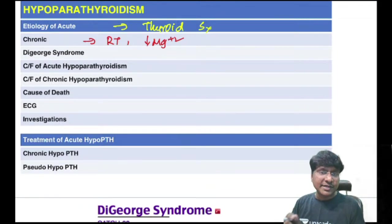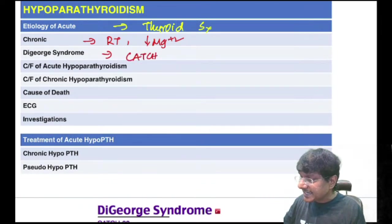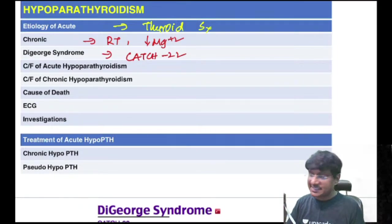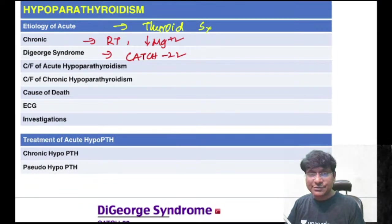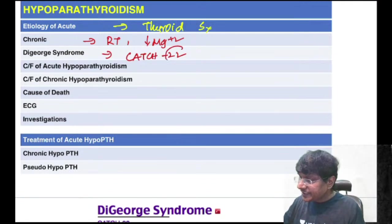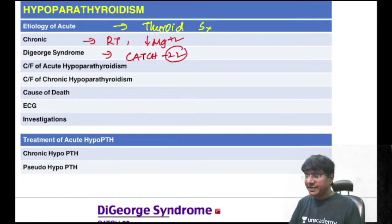DiGeorge syndrome — mnemonic CATCH-22: C = cardiac abnormalities, A = abnormal facies, T = thymic absence/abnormality, C = hypocalcemia, H = hypocalcemia, and 22 = abnormalities on chromosome 22.